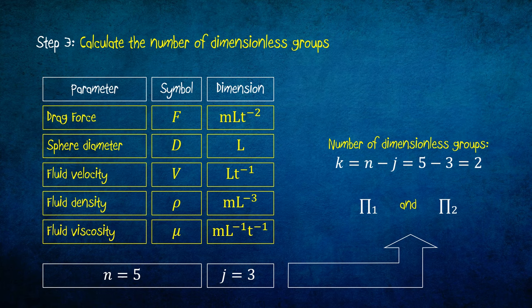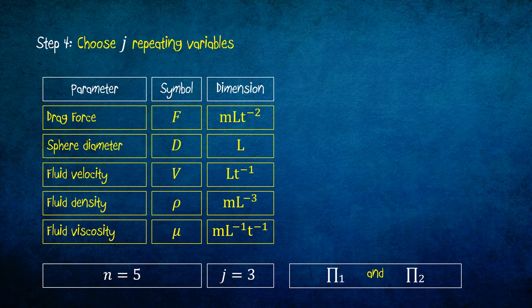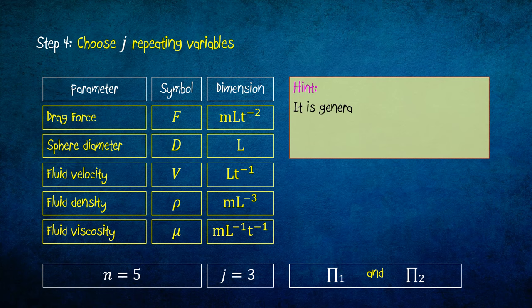Step 4 consists of choosing the repeating variables. As a hint, it is generally advantageous to choose primary variables that relate to mass, geometry, and kinematics.